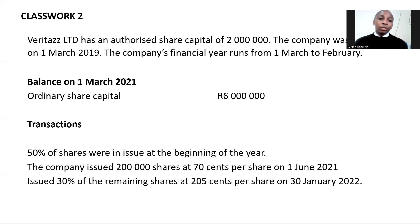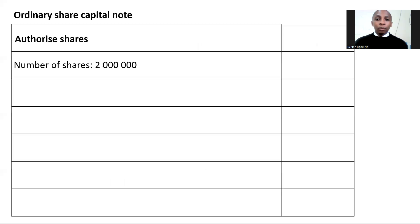I'll go straight to transactions, which says that 50 percent of shares were in issue at the beginning of the year. The question is: 50 percent of which shares? The only number of shares we are given is our authorized share capital of two million. So this transaction tells us that 50 percent of that two million has been issued and is in issue on the 1st of March 2021. To get that 50 percent, we simply take the authorized number of shares. Under your ordinary share capital, it will be divided into two parts: the first will be your authorized shares.